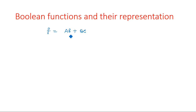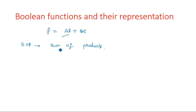SOP and POS are the two different important representations used for Boolean functions. SOP stands for Sum of Products. Here, we first perform products between the given variables — for example, A into B is one product and B into C is another product. Then we make the sum of these two: AB plus BC. This is the example for Sum of Products, SOP.